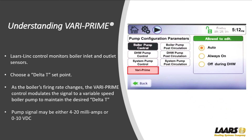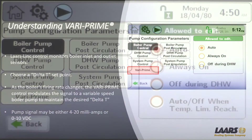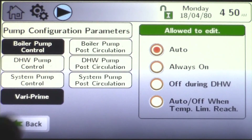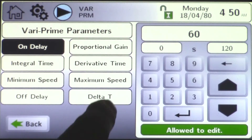That signal sent out to the variable speed pump can either be a 4 to 20 milliamp or 0 to 10 volt DC — you choose that. This works with any manufacturer's pump, providing it's a variable speed pump.